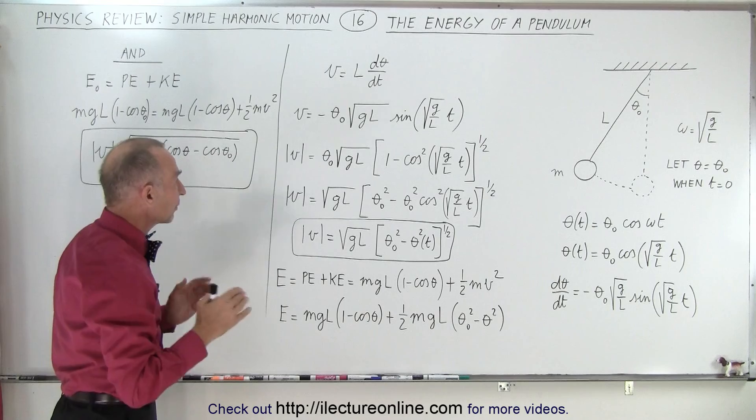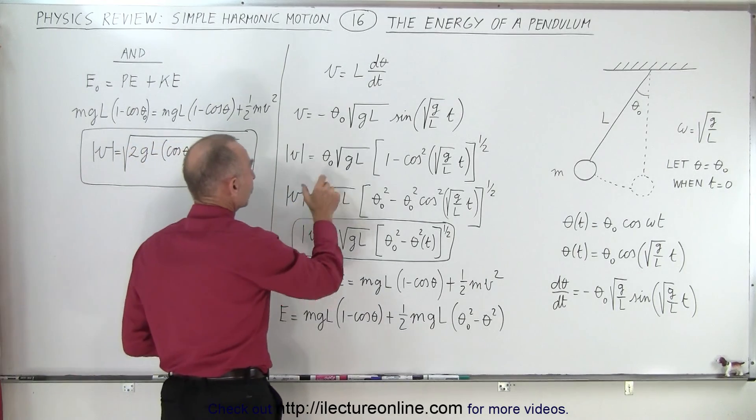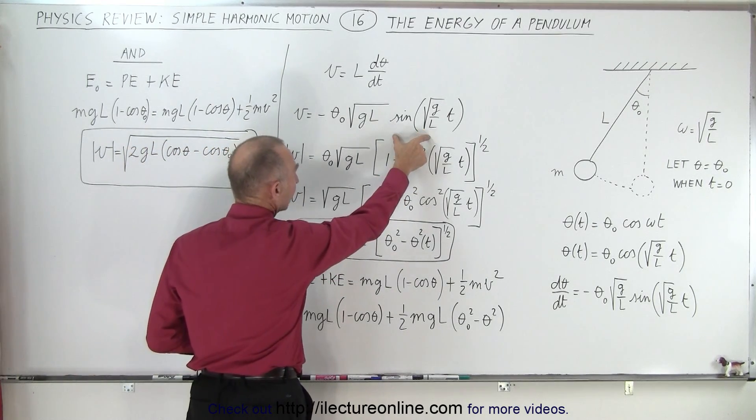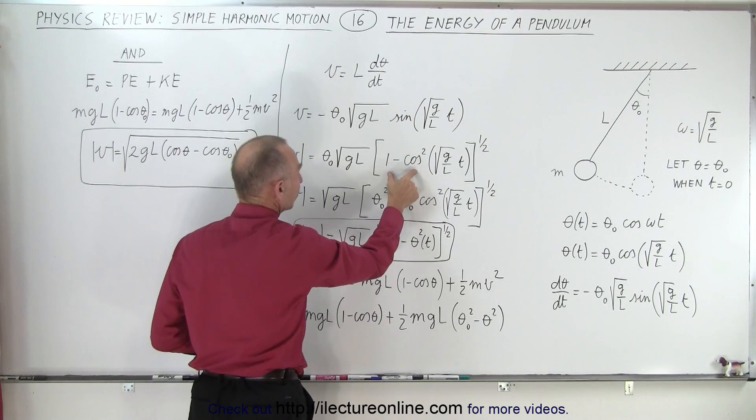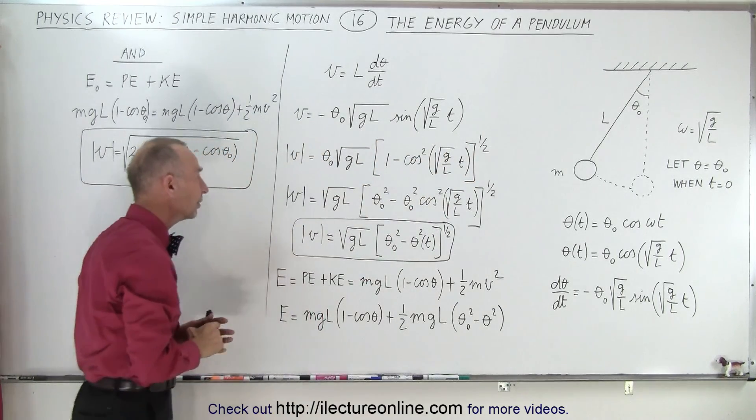Now if we want to have the absolute value of the velocity, we can then take the square root, we can square this, write this one minus the cosine squared and take the square root of that, so I have this as a positive value.